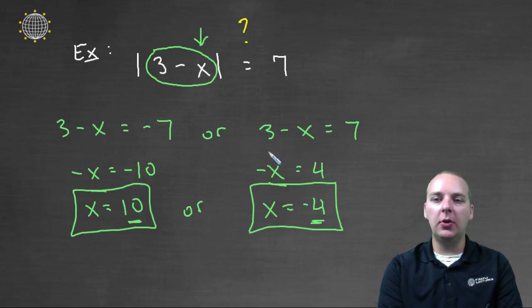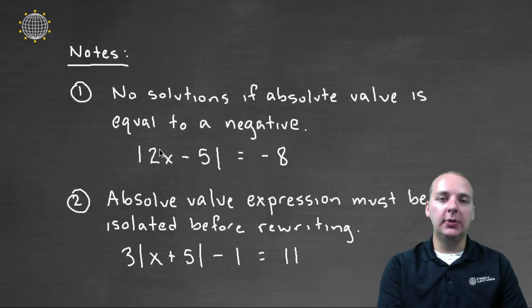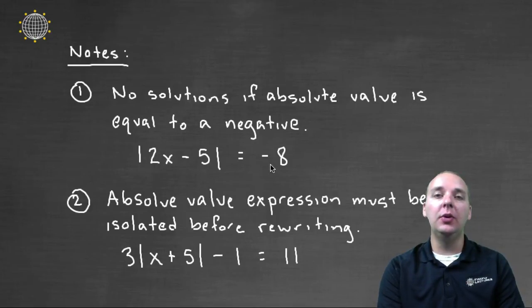So that's pretty much it. You take the inside of whatever is inside the absolute values and set it equal to this number and the negative of this number. Before I let you go, let me give you a couple of extra side comments, a few notes here. You won't get any solutions if what your absolute value expression is set equal to is negative. See, if you had, for example, the absolute value of 2x minus 5 equals negative 8, it would do you no good to set 2x minus 5 equal to negative 8 and positive 8.